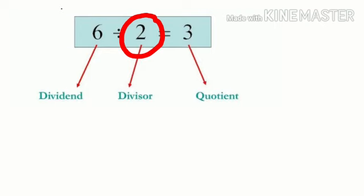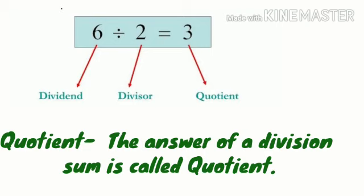The next thing is that quotient. The answer of a division sum is called quotient. So which is the quotient here? Yes 3.